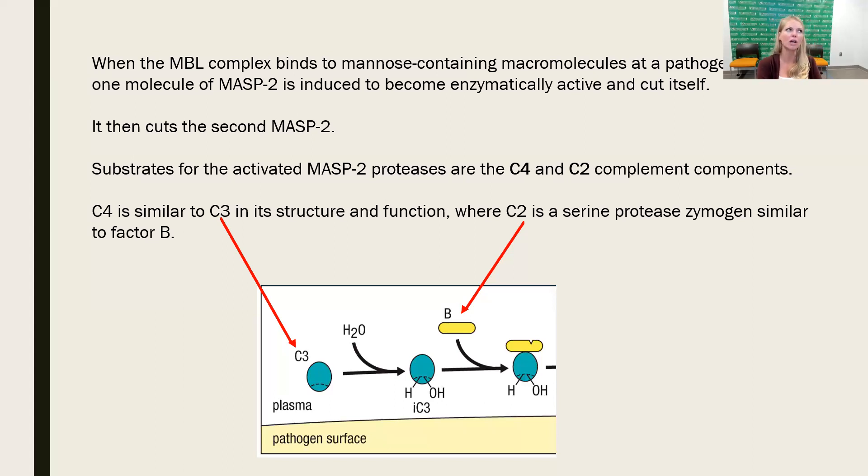This is kind of familiar, pretty similar to what we saw happen with C3 when it got close to the surface of a pathogen, spontaneously being hydrolyzed and becoming iC3. Then there was cleavage of B into BA and BB by factor D. C4 is pretty similar to C3 in its structure and function, and C2 is somewhat similar to what we know as factor B. We're going to see some similarities, they're just slightly different proteins.